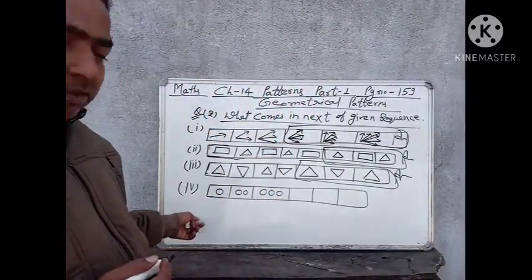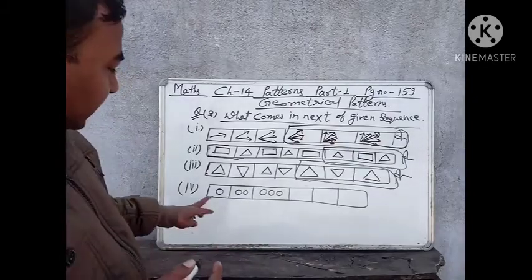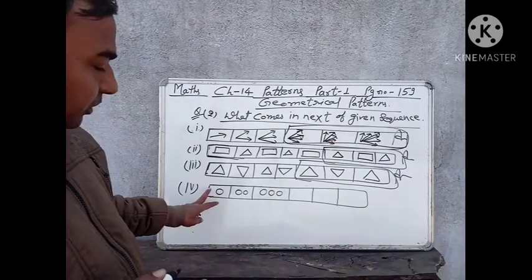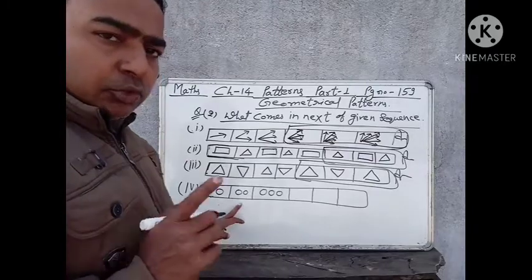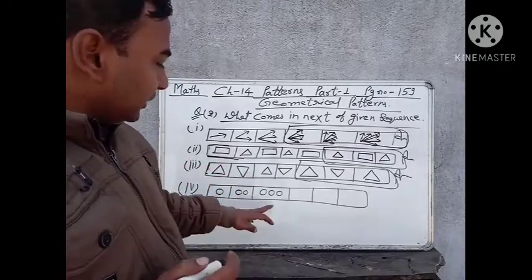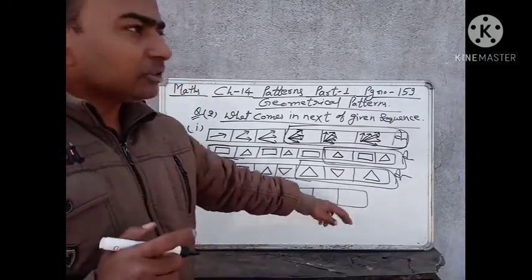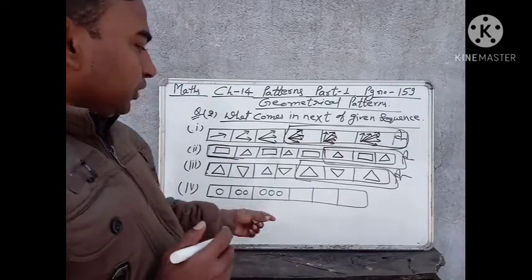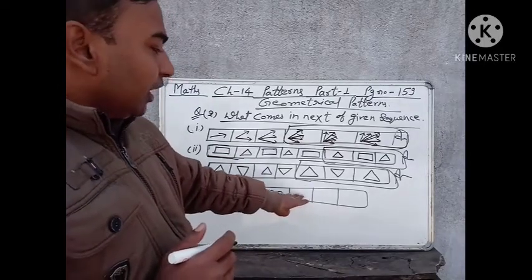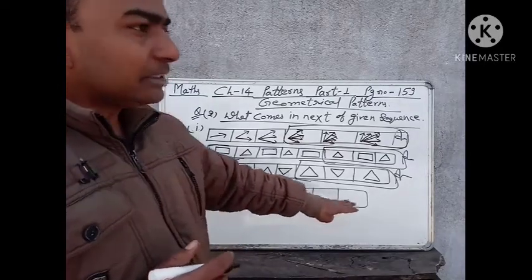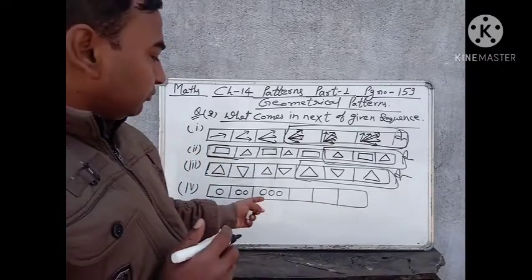The last one is question number four. In the first box you can see one circle, in the second box two circles, in the third box three circles, and three boxes are empty. We have to fill the given three boxes with the correct number of circles.